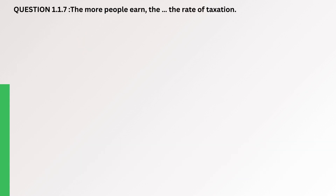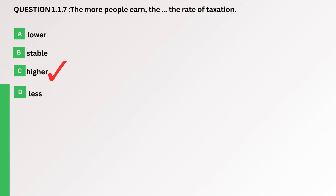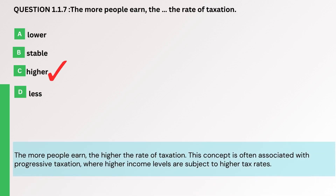Question. The more people earn, the what — the rate of taxation? A. Lower. B. Stable. C. Higher. D. Less. The correct answer is C. Higher. The more people earn, the higher the rate of taxation. This concept is often associated with progressive taxation, where higher income levels are subject to higher tax rates.